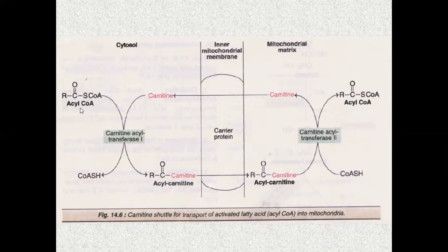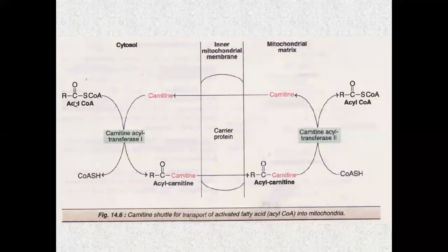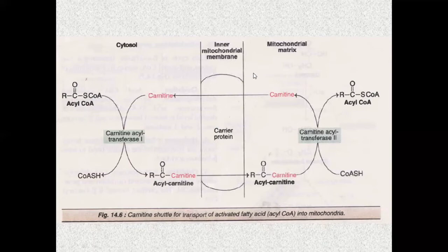The activated fatty acid has to be transported inside the mitochondrial matrix. This is the cytoplasm, this is the outer mitochondrial membrane, this is the inner mitochondrial membrane, and this is the mitochondrial matrix. There are different types of fatty acids with different numbers of carbons. If the fatty acids are smaller than 12 carbons, they can easily pass through the membrane. But if the fatty acids are more than 14 carbons, they are transported via this carnitine transport mechanism.